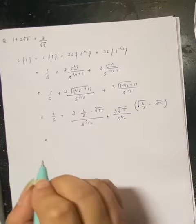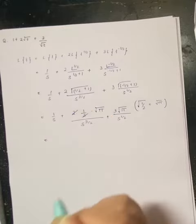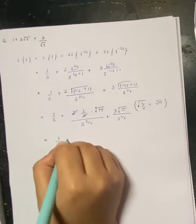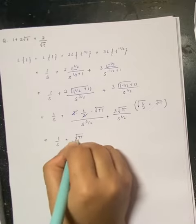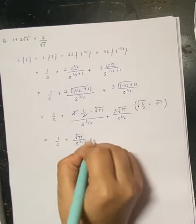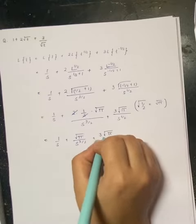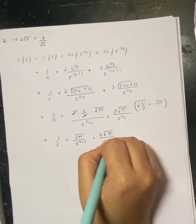So 1 by s plus 2 root pi by s to the power 3 by 2 plus 3 root pi by s to the power 1 by 2.